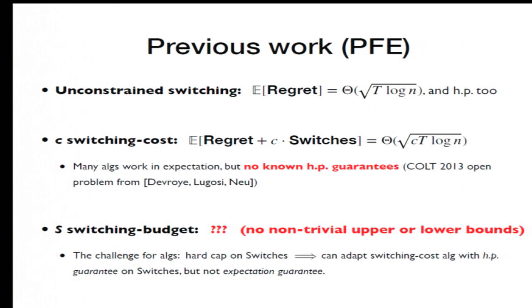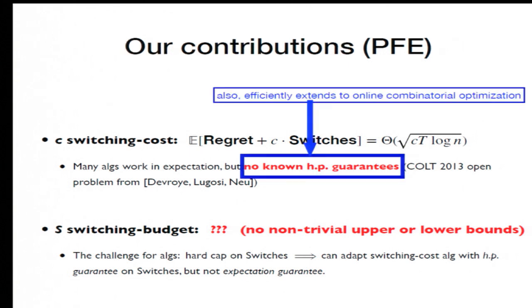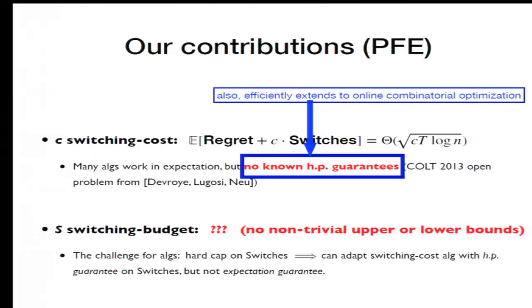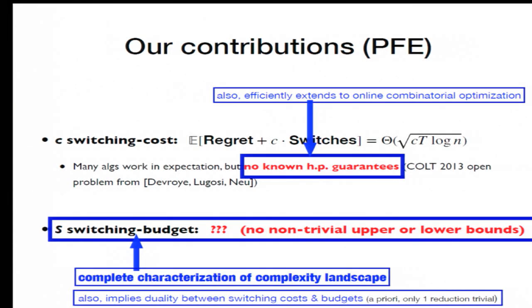So our paper has several contributions. The main two are to resolve both the things in red. So the first is the first high probability algorithms for both regret and switches. We also show this extends efficiently to online combinatorial optimization with limited switching.